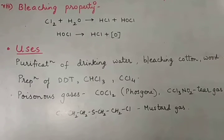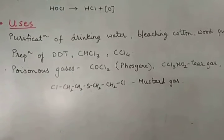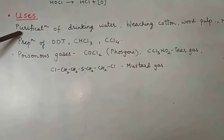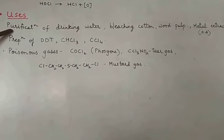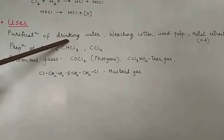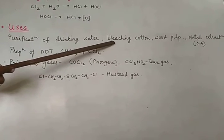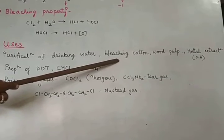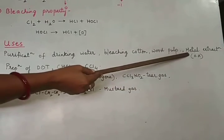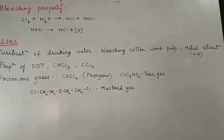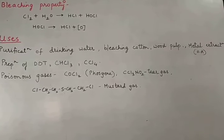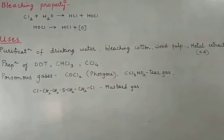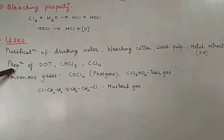Regarding the uses of chlorine: it is used in the purification of drinking water to kill bacteria and germs present in water. Due to its bleaching action, it is used in bleaching of cotton, wood pulp, and textiles. It is also used for metal extraction in pure form because it acts as an oxidizing agent and undergoes reduction, making it useful in various metal extraction reactions.